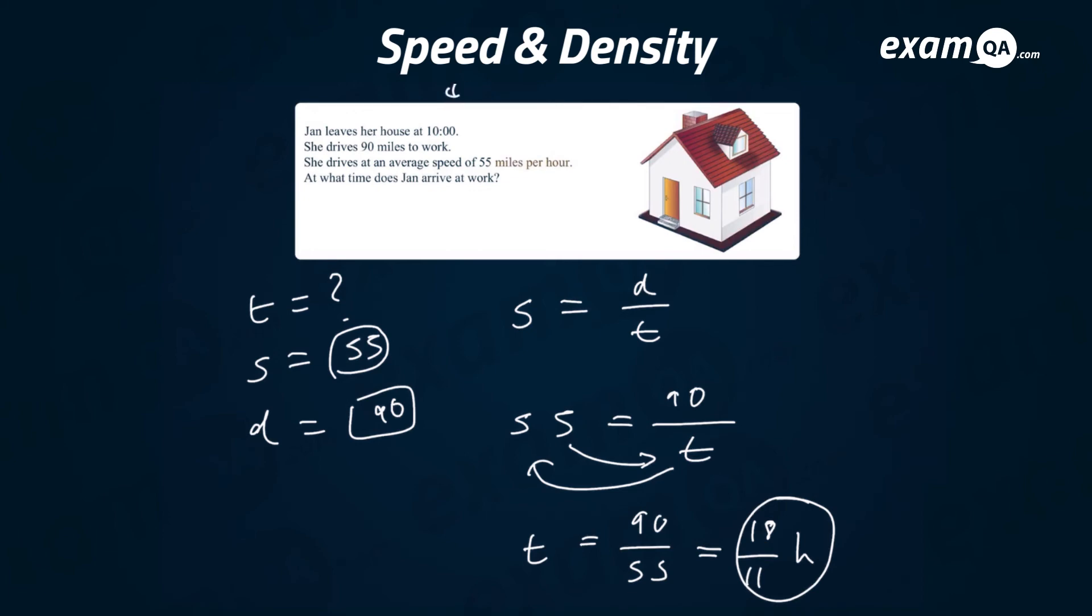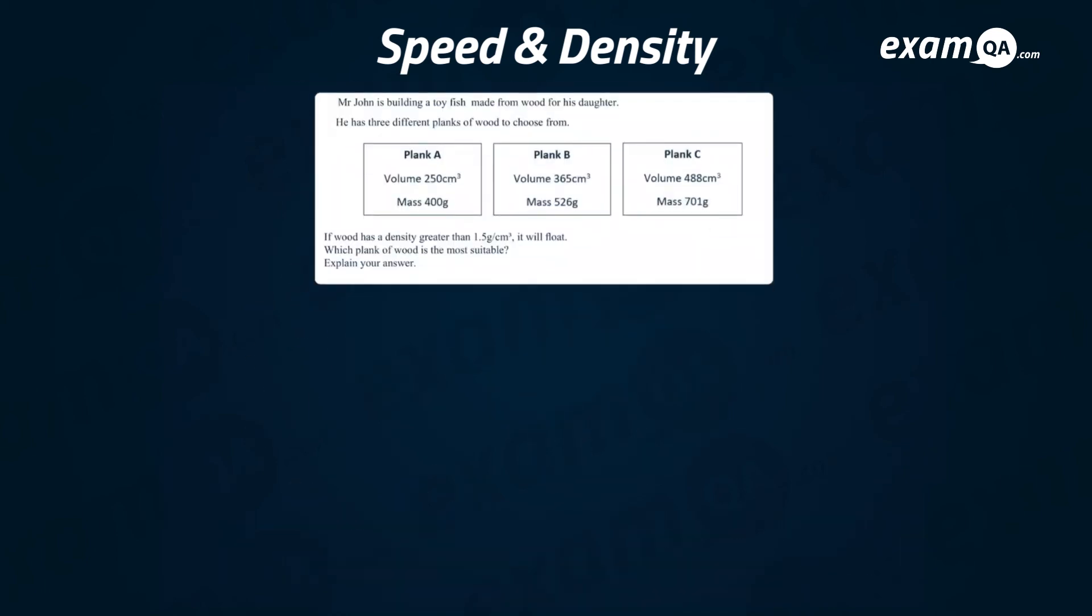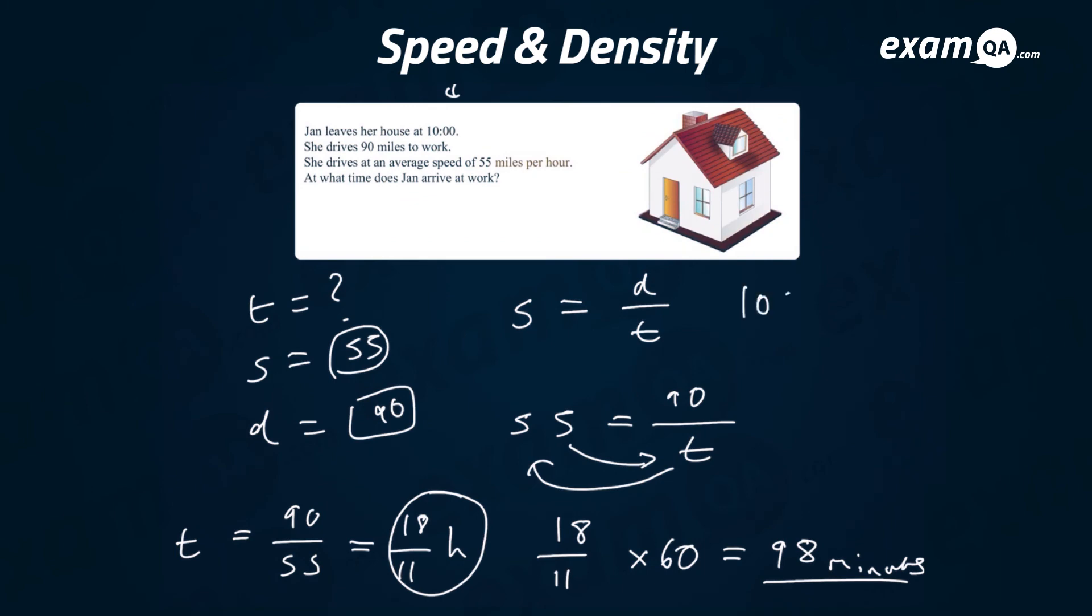They want the exact time so I need to somehow convert this into minutes which might make my life a bit easier. Jan left at 10 o'clock so if we worked out how many minutes she took to get to work it would be easier to calculate. If you want to convert hours into minutes just times it by 60 and you get 98 minutes. So she started at 10, she took 98 minutes, so it's definitely past 11 o'clock because that's 60 minutes. If you do 98 take away 60 you'll get 38 minutes so that means it must have been 11:38.